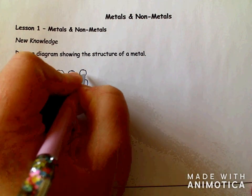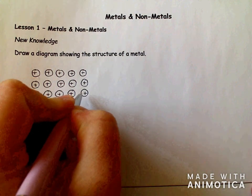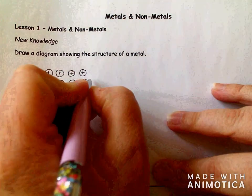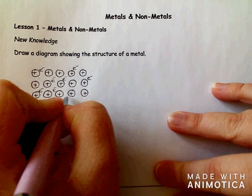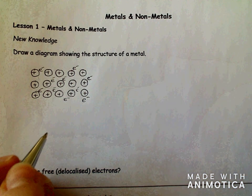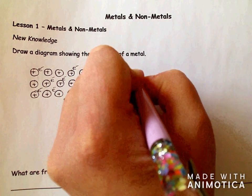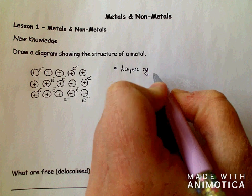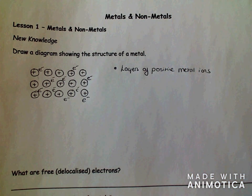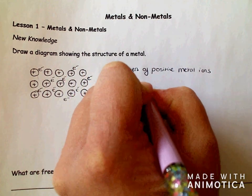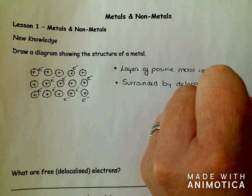I'm going to show they're positive by putting a plus sign in each of them. Now these are surrounded by what we call free electrons. Sometimes they're described as delocalized electrons. So we could say there's a sea of delocalized electrons. So to summarize, we have layers of positive ions, positive metal ions surrounded by delocalized electrons.